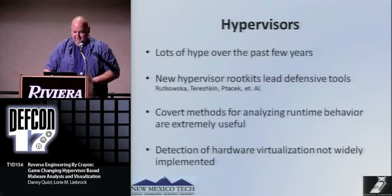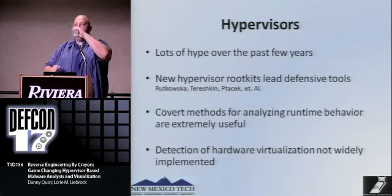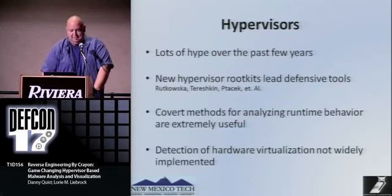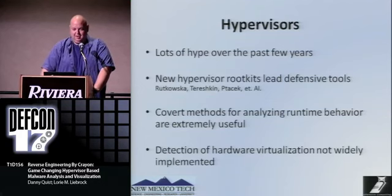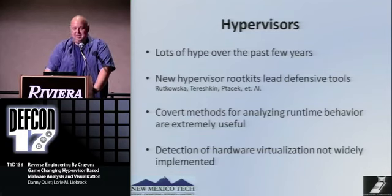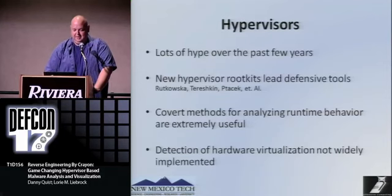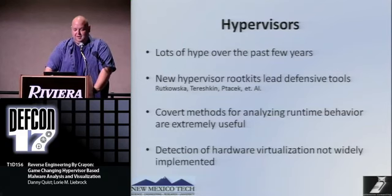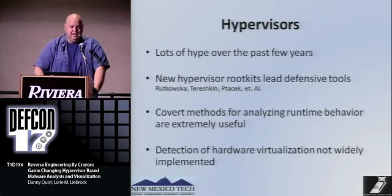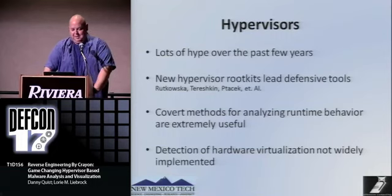Let's talk about hypervisors. There's been a lot of hype over the last few years and I'm not trying to add to it, even though the talk title suggests otherwise. A lot of new hypervisor-based rootkits like Blue Pill have led development of defensive tools. The offensive need to hide from a running process or any introspection from code inside the OS works well in this environment. One big feature we're exploiting is that detection of hardware-based virtualization is not widely implemented — it's not impossible, but I don't see much of it in the wild.